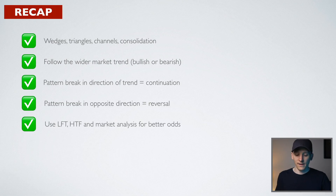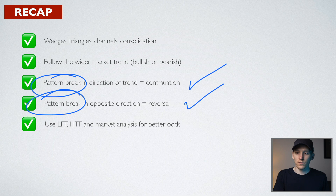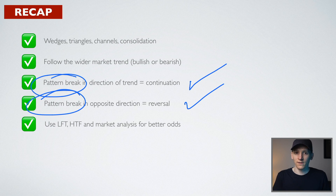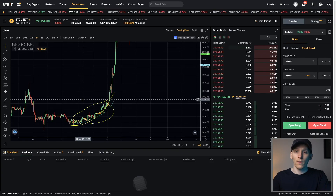To recap: all we're looking for is a pattern to trade a breakout, either in continuation of the trend or a reversal. Patterns are just one type of trading — they don't work all the time, but at the very least they give us an entry area with a stop loss to hone our skills. They will fail frequently because market conditions change and patterns don't know what's happening fundamentally. Use low and high time frames for better odds, understand the trend and market, and combine technicals with fundamentals. Check the links in the description for the crypto course, Bybit deposit bonus up to $4,000, and other resources.